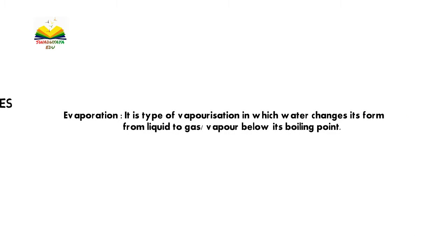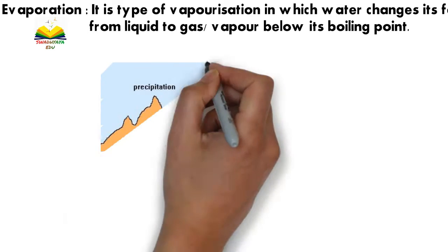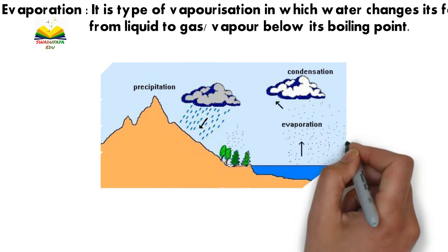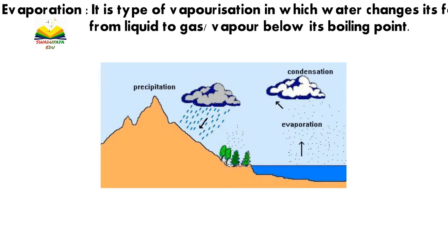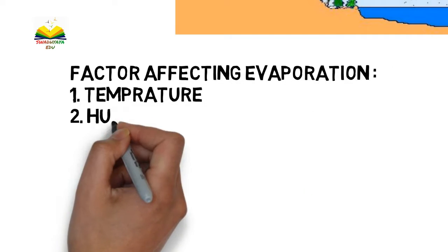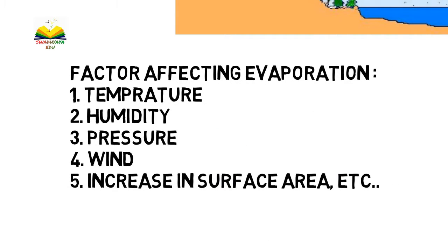Next is evaporation. It is a type of vaporization used when water changes its form from liquid to gas or vapor, below its boiling point. In vaporization, the liquid directly changes to vapor without reaching the boiling point. For example, you can observe the vapor that rises from the sea — that is all evaporation. Factors affecting vaporization are temperature, humidity, pressure, wind, and increase in surface area.